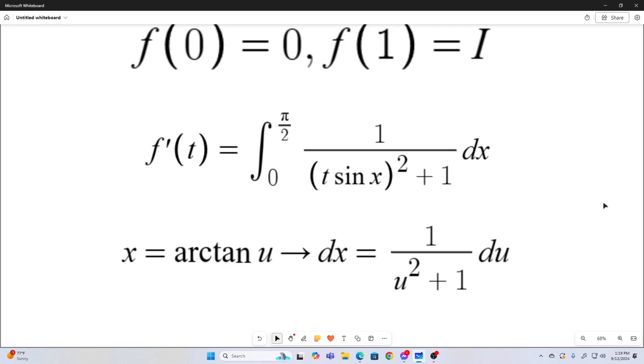That is, x is equal to arc tangent u, or u is equal to tangent x, if you prefer. I just like expressing the substitution in terms of x. That way, dx is very easy to find. And by the way, our dx will be 1 over u squared plus 1 du.